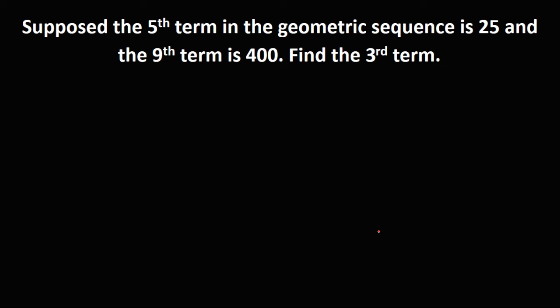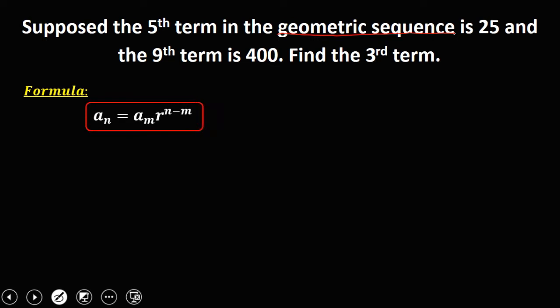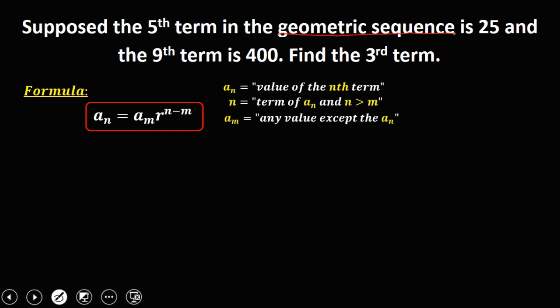Let's have this problem. Suppose the fifth term in the geometric sequence is 25 and the ninth term is 400. Find the third term. Since this is a geometric sequence problem, we need to solve first for the common ratio using the formula: a sub n equals a sub m times r to the power n minus m. Here, a sub n is the value of the nth term, n is always greater than m, and a sub m is any other known term.